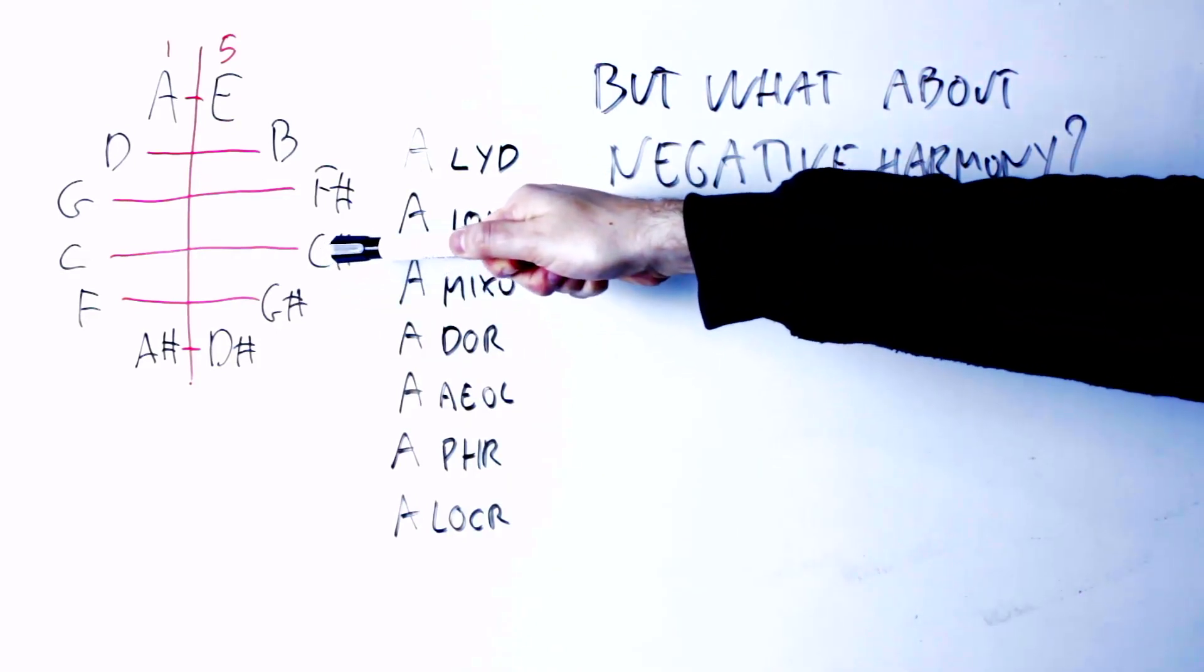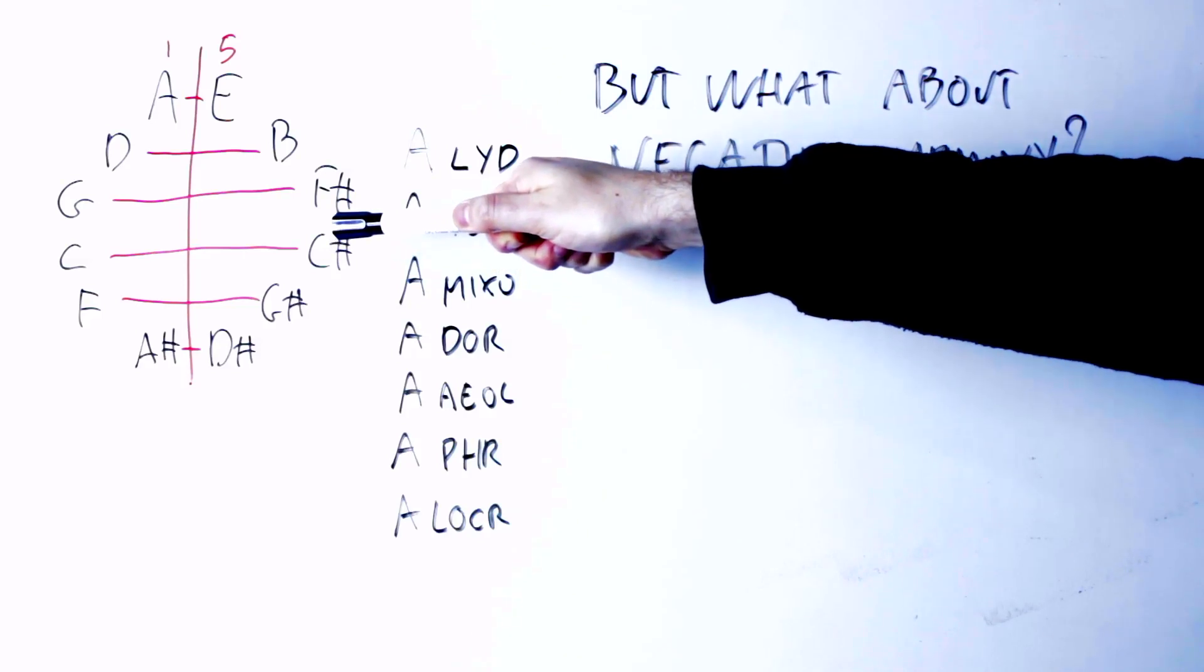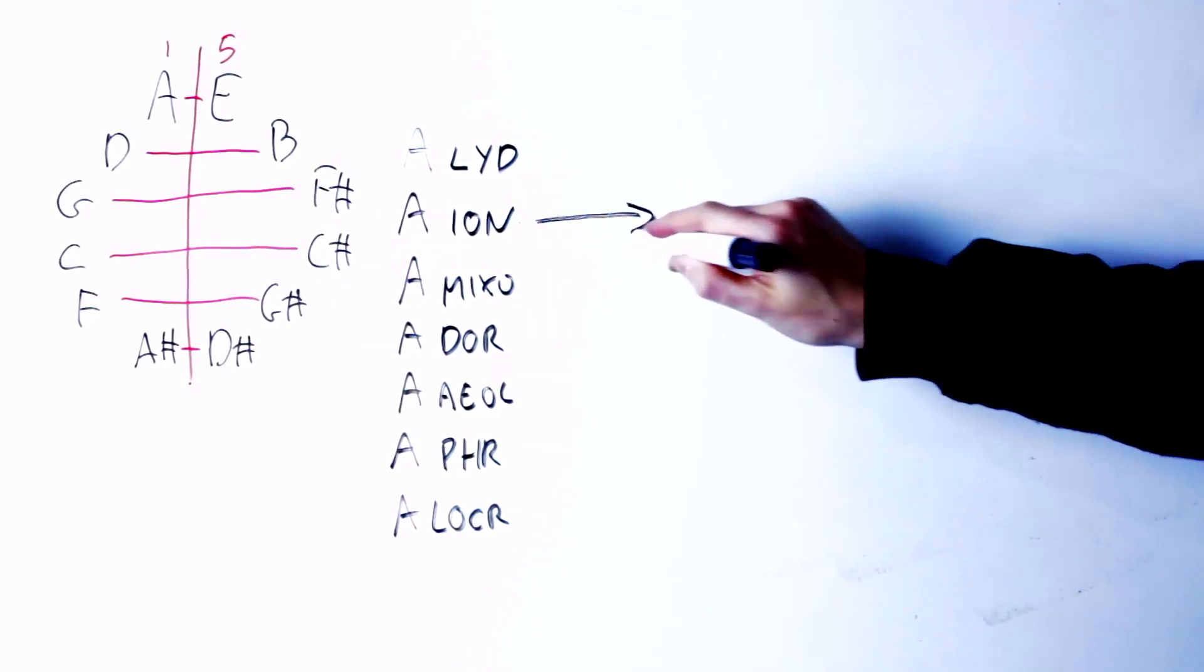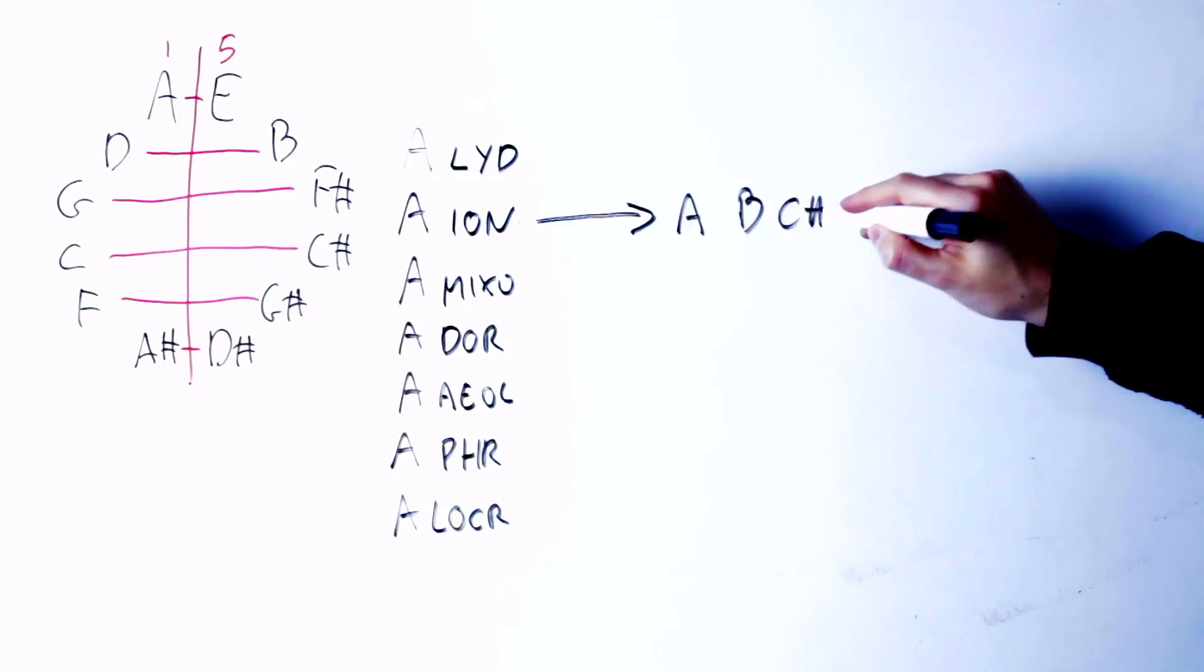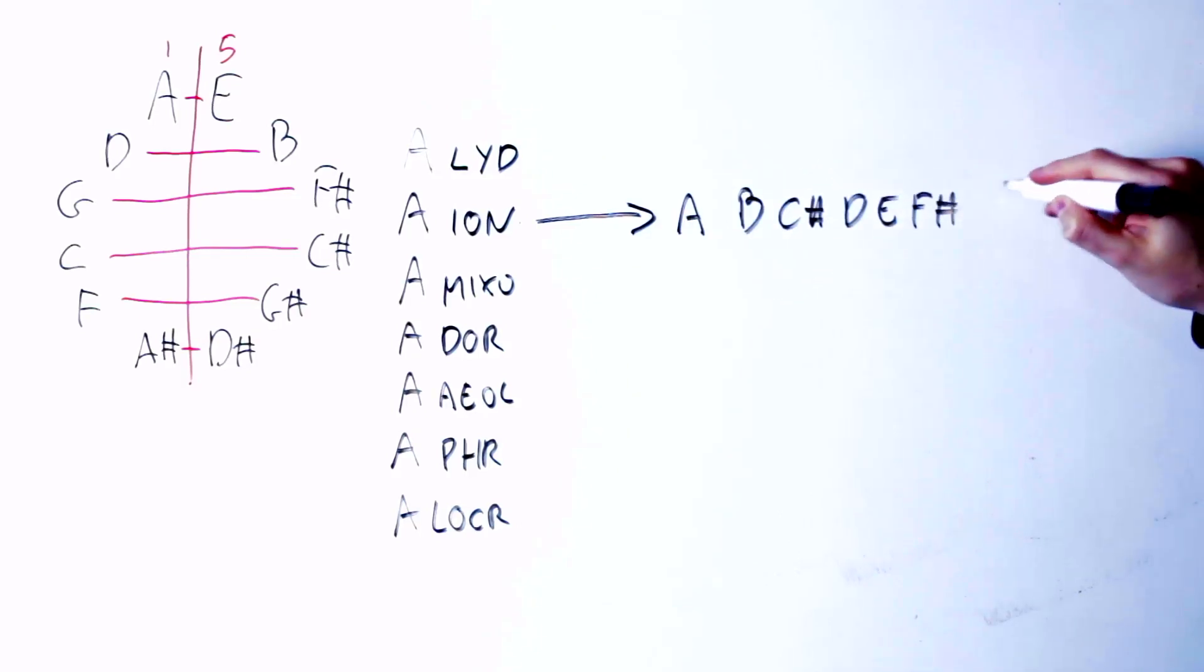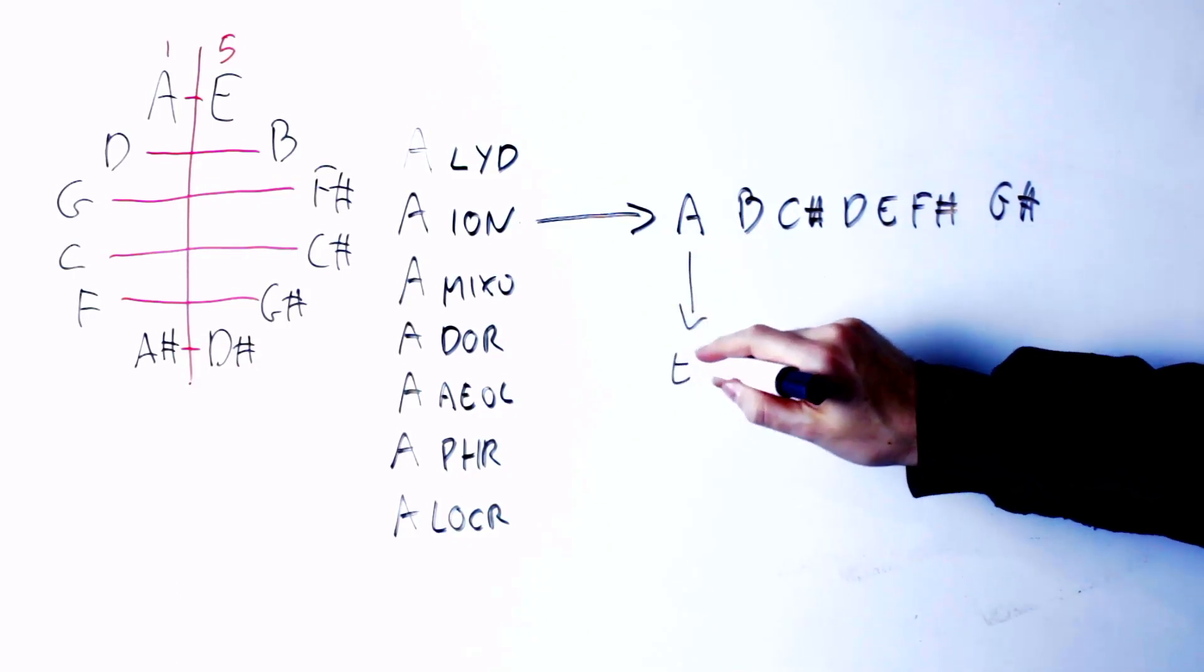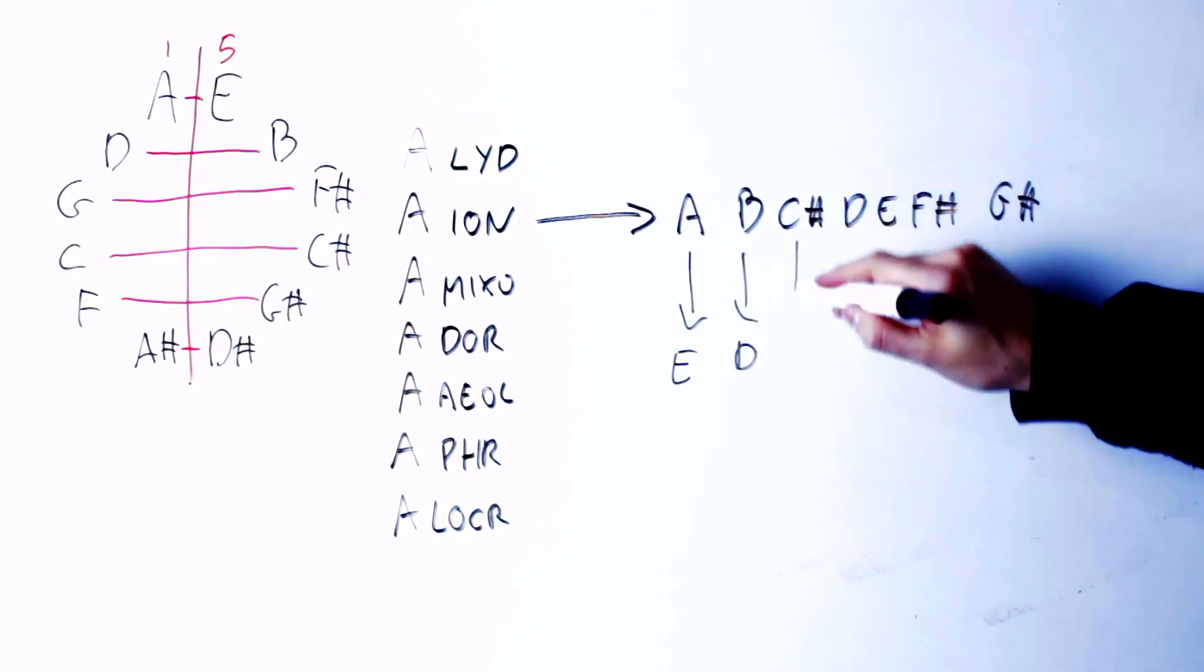Again, this is how the notes get exchanged in the key of A. So if I take the A Ionian mode, which as we know is just the A Major scale, and I apply the negative harmony transformation, what I get is this. I have to transform the scale note by note, so the A note becomes an E, the B note becomes a D.